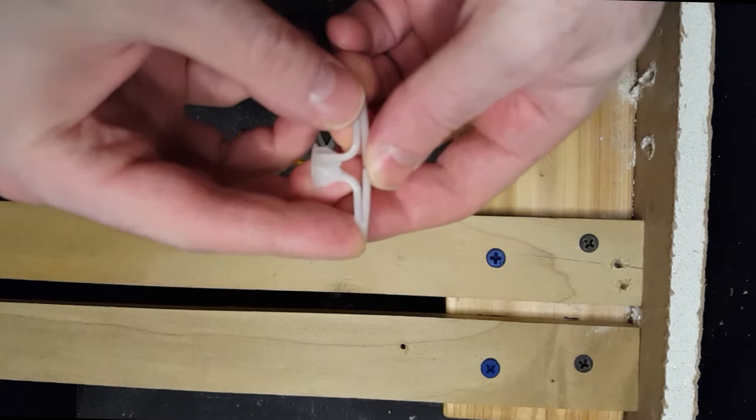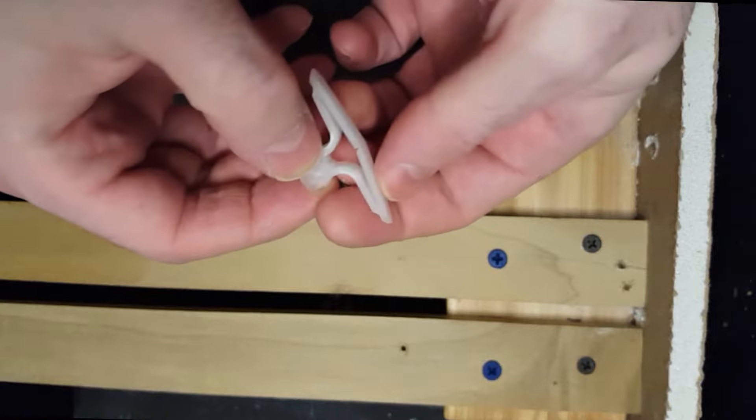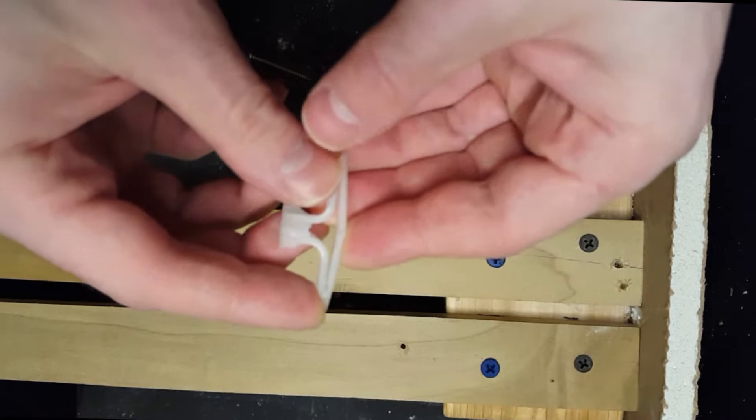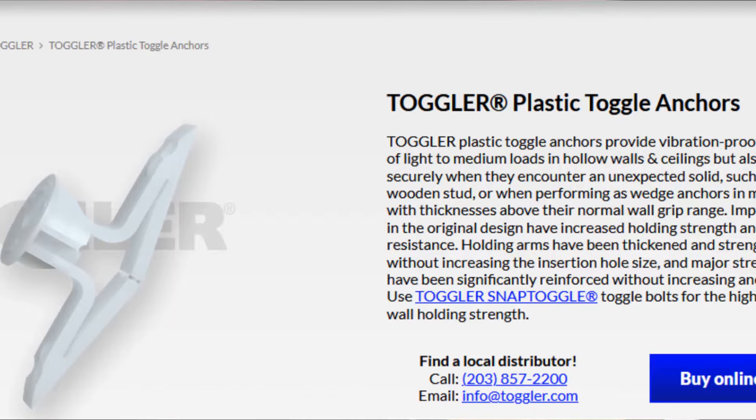In this video, I'm going to show you about the Toggler Plastic Anchor, also known as a Pop Toggle. Several different companies make this style of anchor, including the Hillman Group and Toggler.